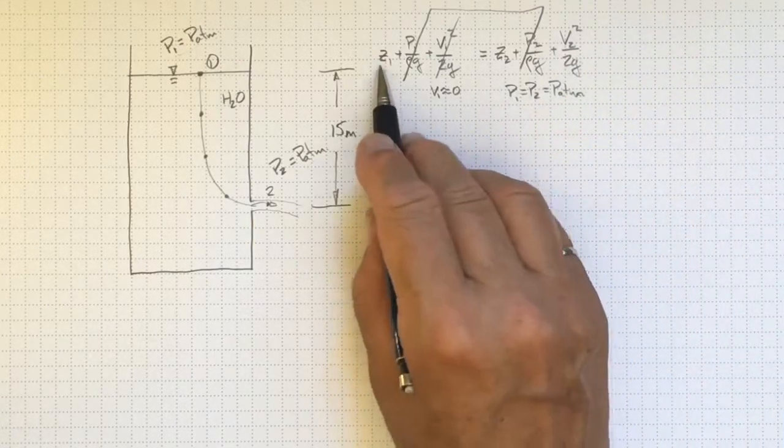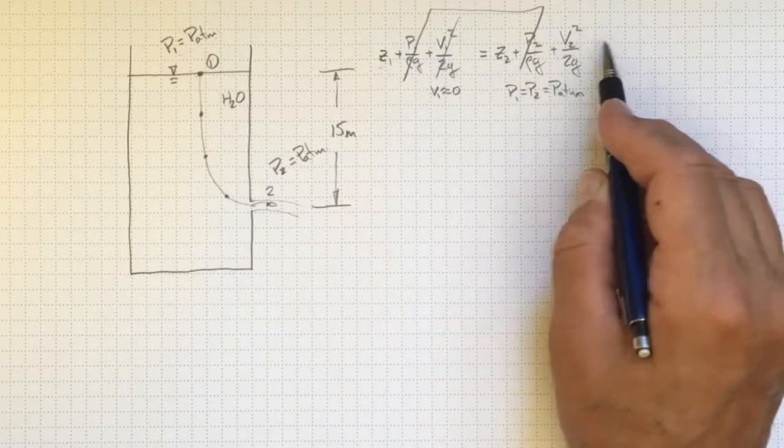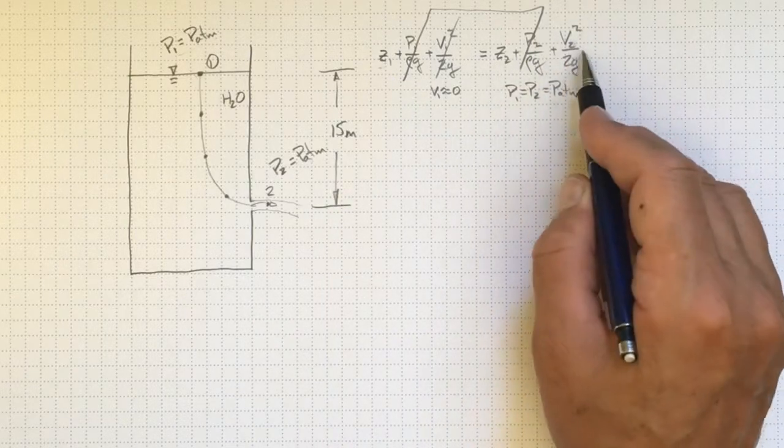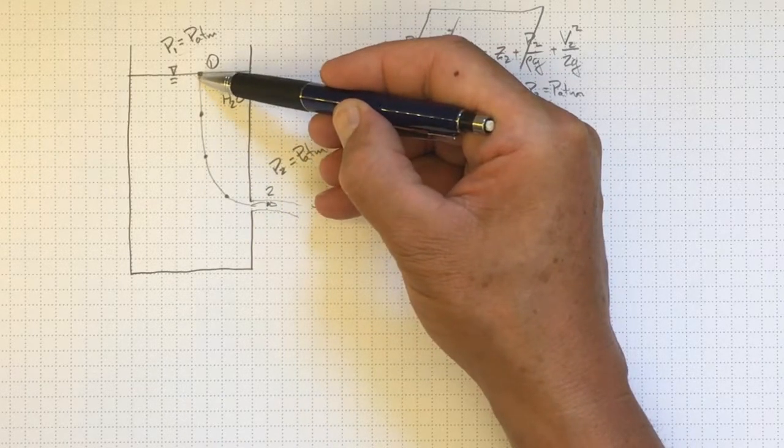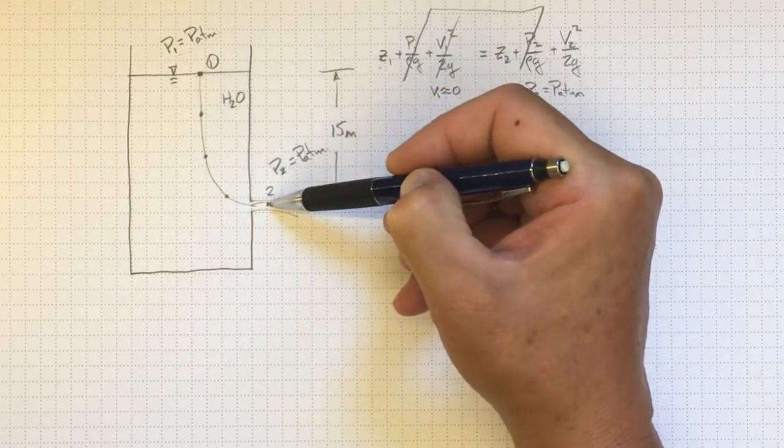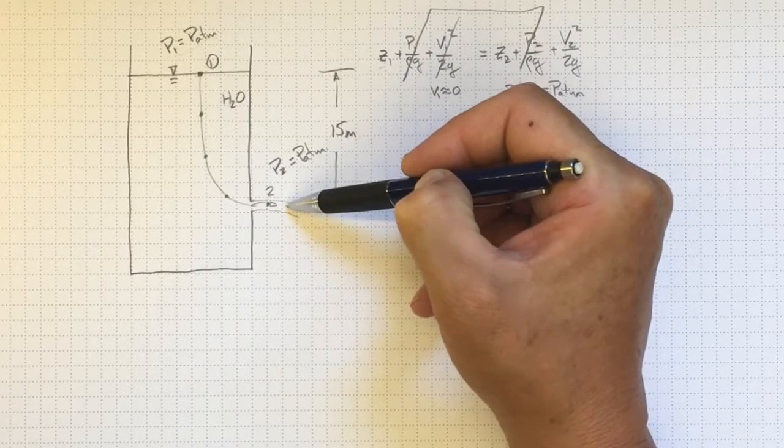We're left now with just the difference between Z1 and Z2 and the velocity at location two. So what's going to happen is all the potential energy of elevation here is being turned into kinetic energy of motion down here.